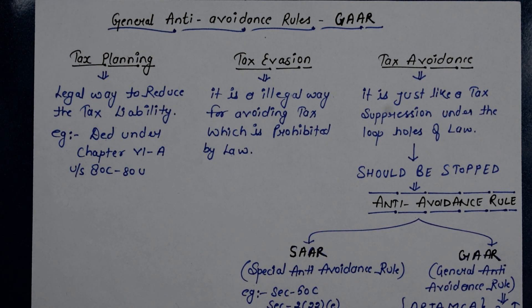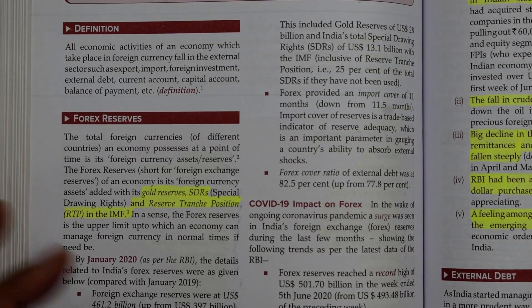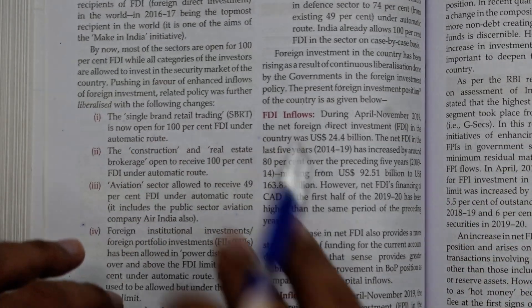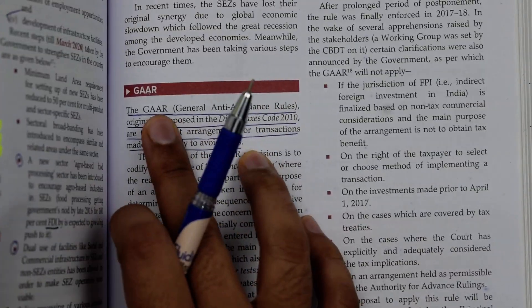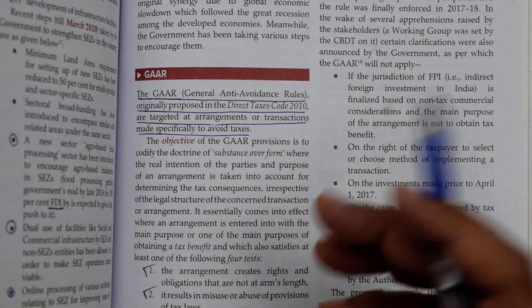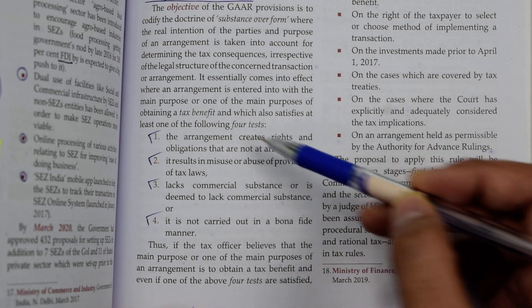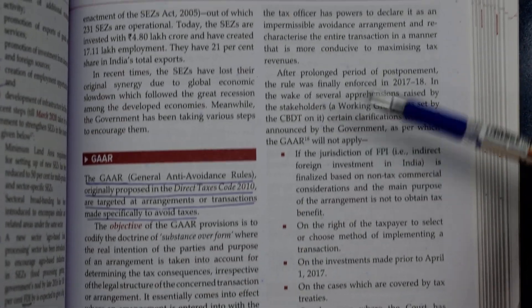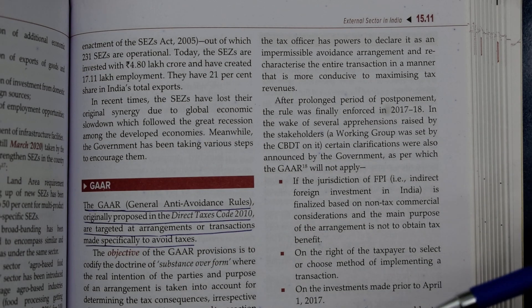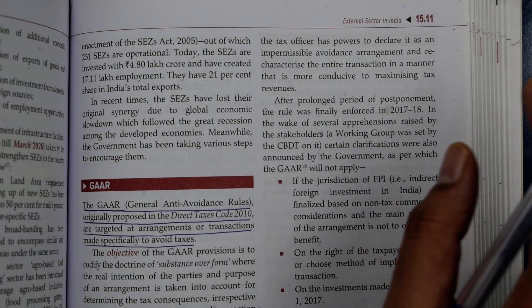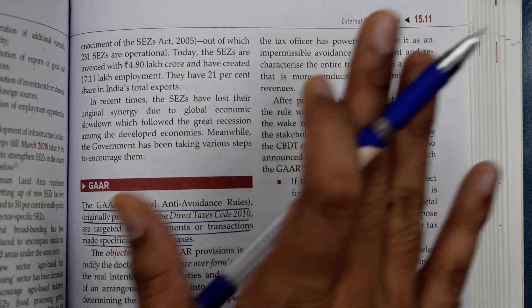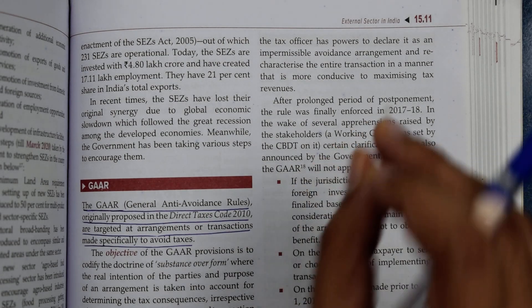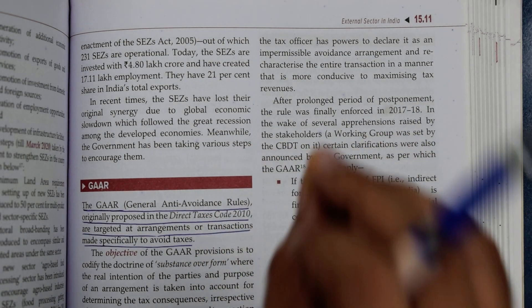GAAR is the rule of law. It was introduced in 2010 but was actually implemented and made effective from 2017. When I studied this topic, I didn't find it well-explained in the textbook, so I made detailed notes. I will upload all of these notes to our Economics Easy Telegram channel. If you haven't joined, the link is in the description box.